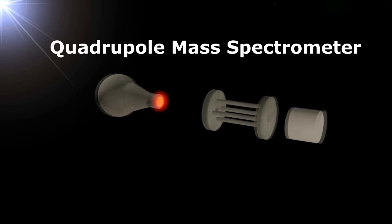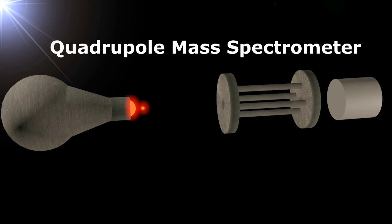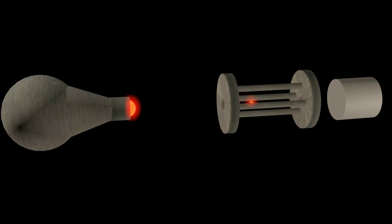Hey, what's up? The quadrupole mass spectrometer is used to study the mass-to-charge ratio and abundance of gas-phase ions.